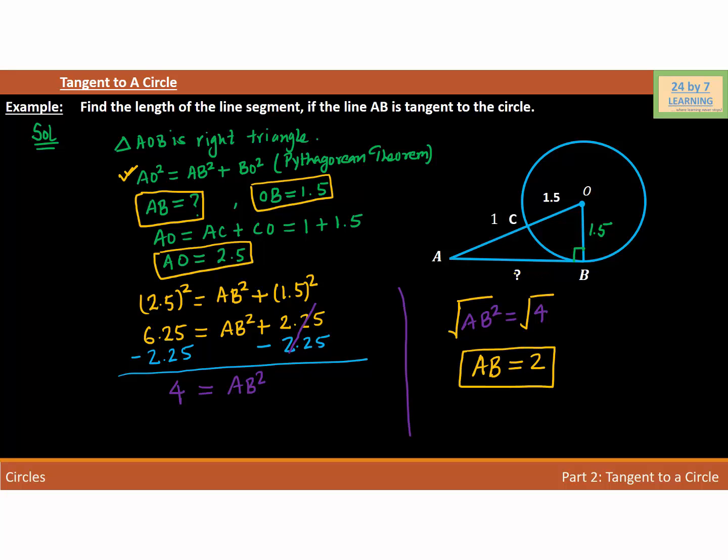So basically, the length of side AB, which is this side marked with a question mark, is equal to 2. So our answer is AB = 2. And this is how we solve a question related to tangent to a circle.